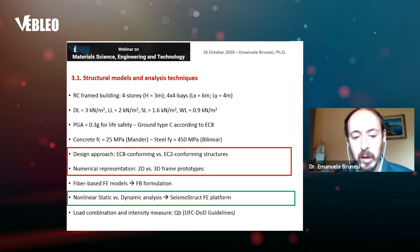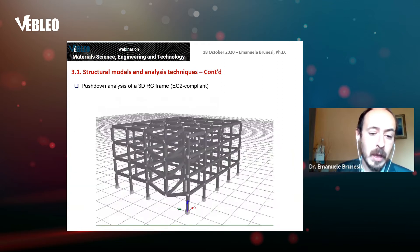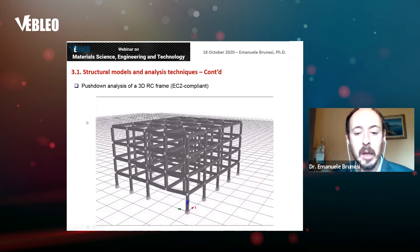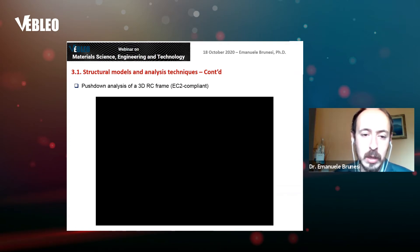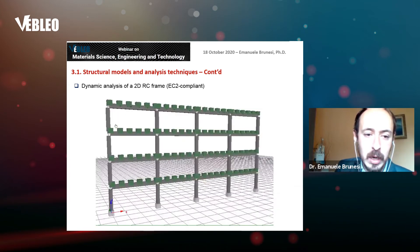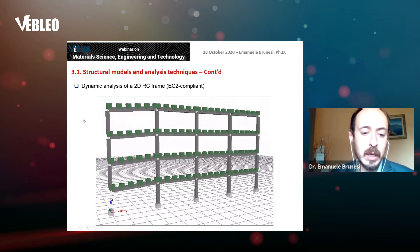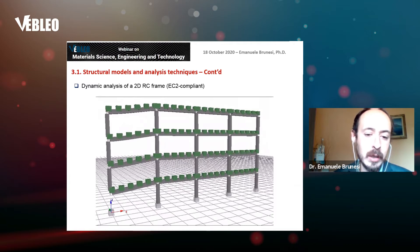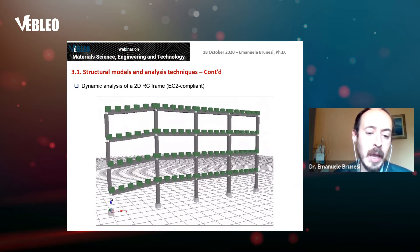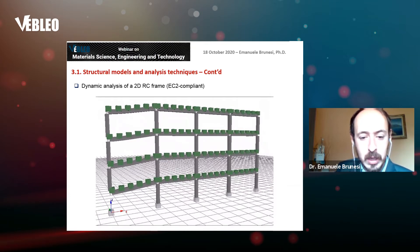Here is a video showing the pushdown analysis of one case study structure. You can see damage. There is another video that shows a sudden removal of a column, and the structure is subjected to this type of mechanism. The structure oscillates upward and downward, damages, and eventually collapses.